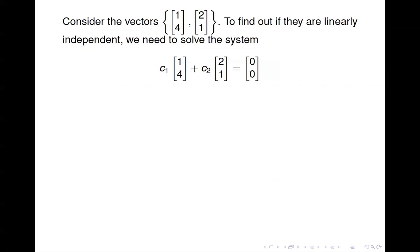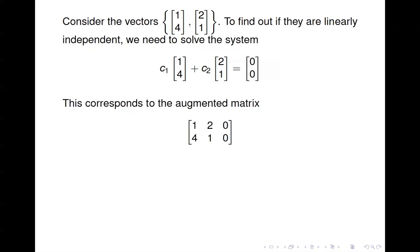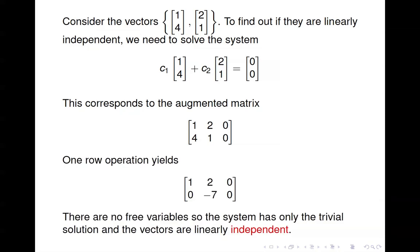Here's a couple of vectors. If we want to find out if they're linearly independent, we take a linear combination of them and set it equal to zero, as shown here. We put that into an augmented matrix — just the two vectors in the columns with the zero vector tacked on — and we can do one row operation to zero out a position. Notice that we have no free variables, and therefore we have only the trivial solution. The solution is unique, so these vectors are linearly independent.